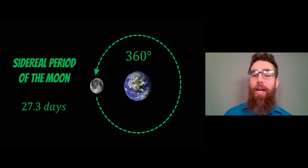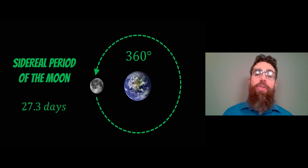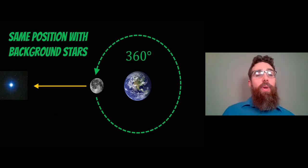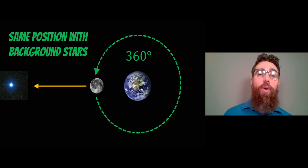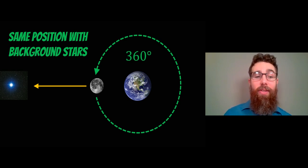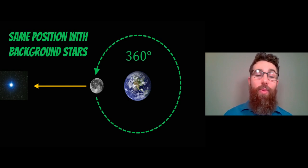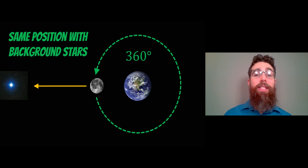The Moon goes all the way around its orbit and comes back to the same position as it started — 360 degrees all the way around. If we're looking from Earth, we can find how long that takes by looking at the background stars. So if the Moon comes to the same position with respect to the same background stars it started at, we can get an idea for how long it's taken to go all the way around.